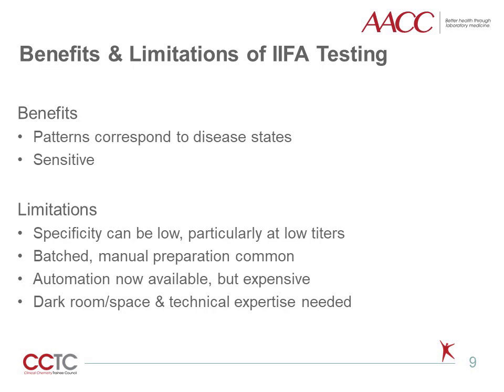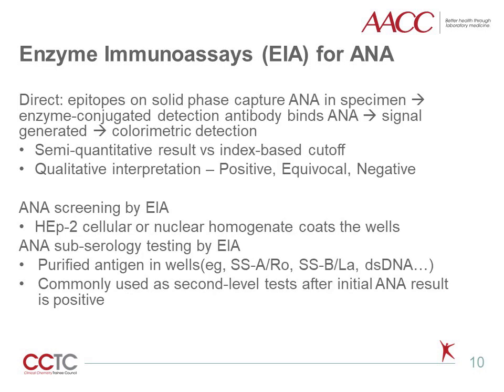The benefits of IFA include clinically relevant information about pattern and relatively good clinical sensitivity. The limitations of the IFA technique involve specificity for disease, particularly for weakly positive test results. Preparation is still manual at most testing sites, with specimens typically batched for cost and workflow reasons, which can prolong turnaround time and delay result reporting. IFA automation is available but expensive. Also, the IFA method requires relatively advanced local technical expertise for testing and interpretation, and a dark or light-shielded space for optimal visibility of fluorescence patterns.